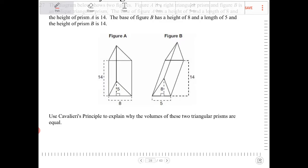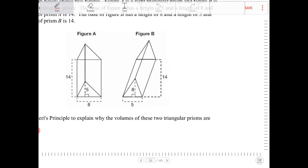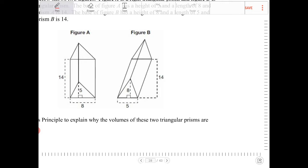Let's just maybe recap what Cavalieri's principle is saying. It's saying that if you have a right prism versus an oblique prism, so something that looks like this. So let's say I have a cylinder. Let's not use the triangular prism there as the example.